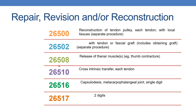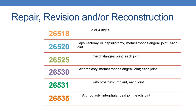The next is 26508: release of thenar muscle — for example, to treat thumb contracture. Next is 26510: cross intrinsic transfer, each tendon. 26516: capsulodesis, metacarpophalangeal joint, single digit. For two digits it is given by 26517. For three or four digits it is given by 26518.